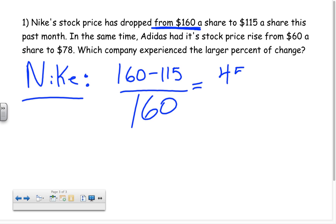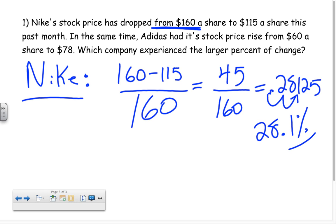When we do the math here, we get 45 over 160, which we can simplify, or as a decimal works out to 0.28125. And that's a decimal as of right now. So if we want to convert that to a percent, we move the decimal over two places, and it becomes 28.1 to the nearest tenth percent. Okay, so that's Nike.